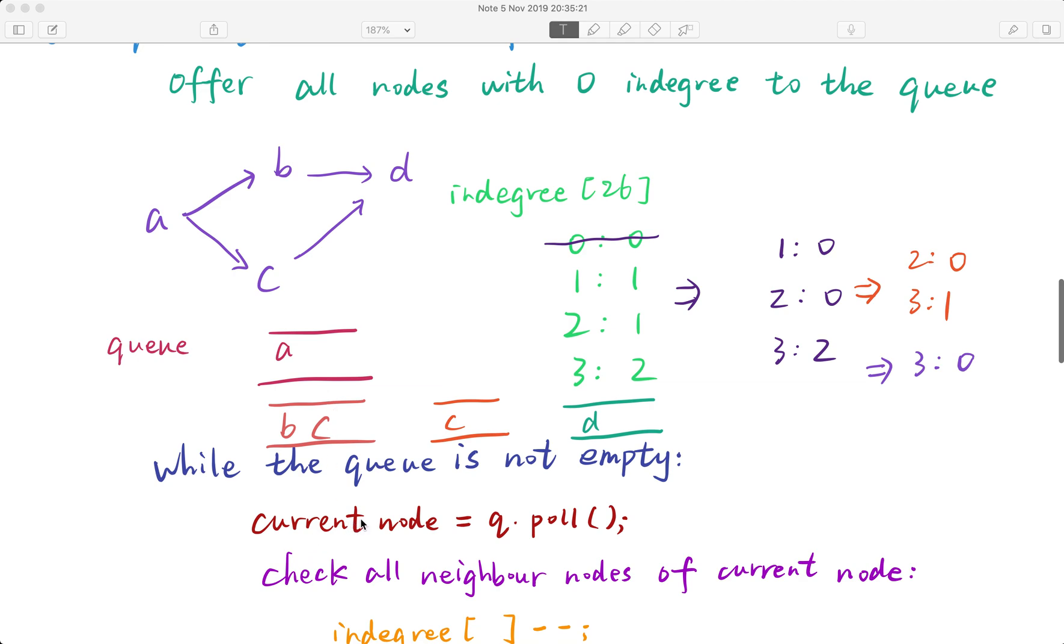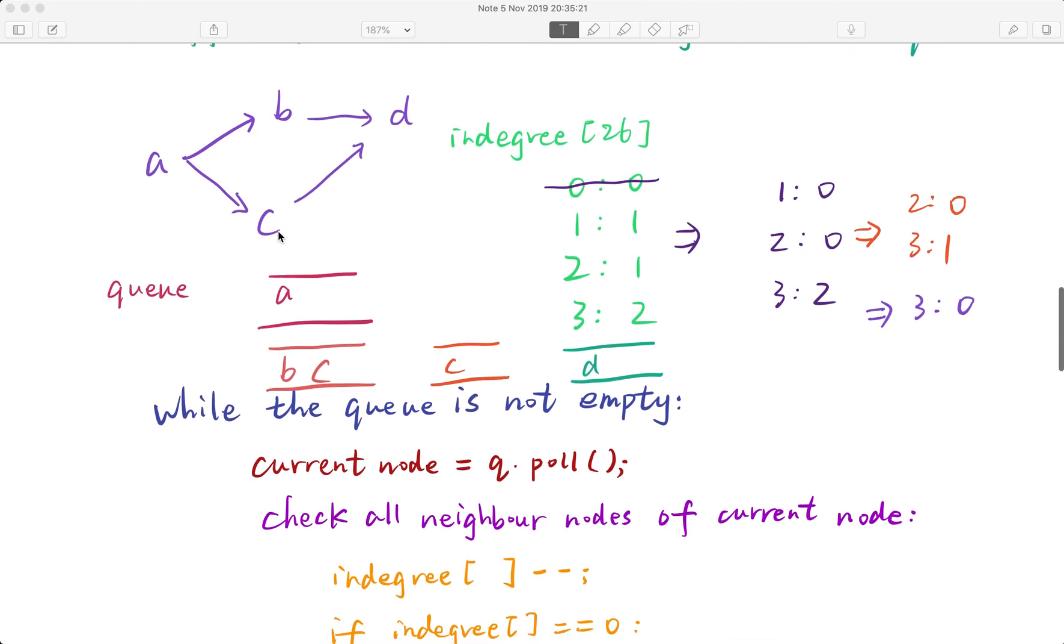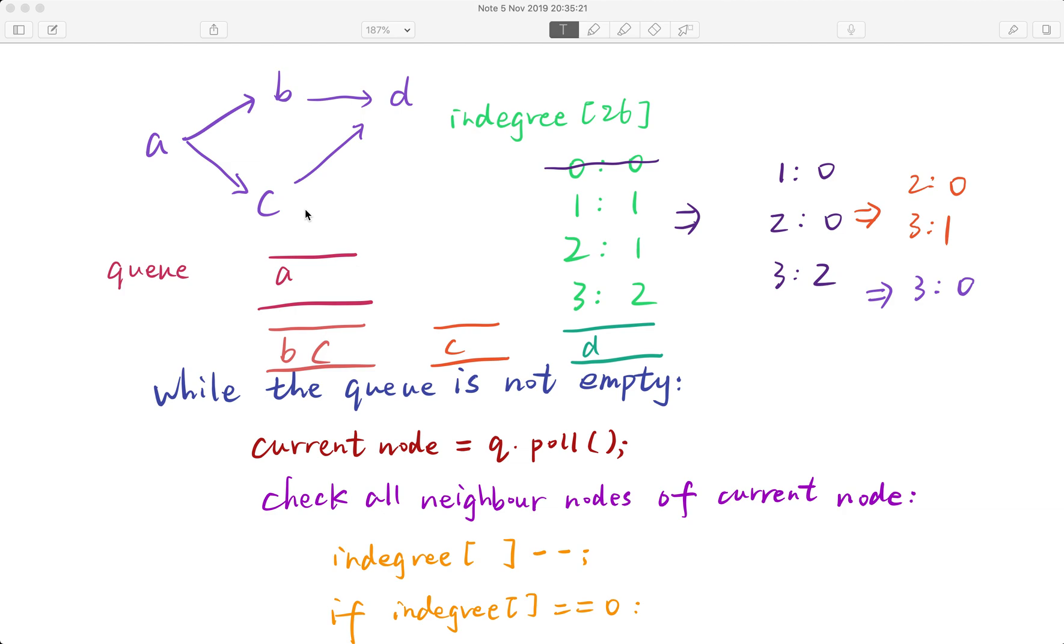While this queue is not empty, we will poll the node from the queue. So current node is a. We will check all the neighbors of this node, which are b and c. Currently what we need to do is to decrement the in-degree of these two nodes.